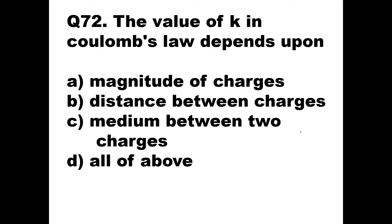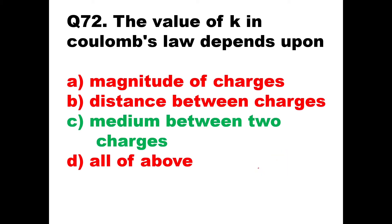Question number 72: The value of constant K in Coulomb's law depends upon what? In the formula F = K × Q1 × Q2 / d², the constant K depends upon the medium between the two charges. So option C is the right answer: medium between two charges.